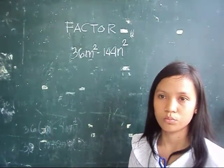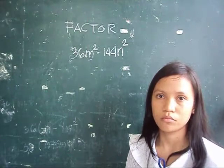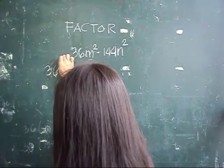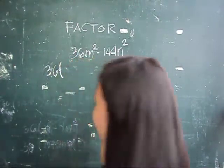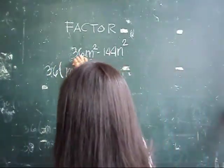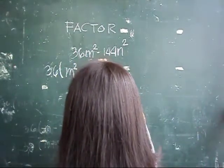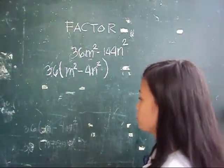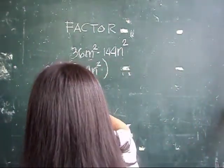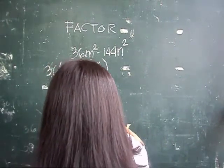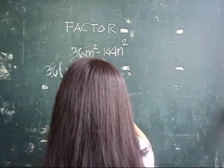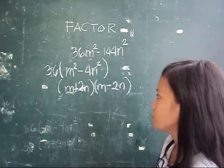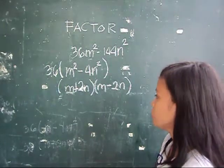Factor 36m squared minus 144n squared. Factor out 36. The other factor is n squared minus 4m squared. But we can still factor n squared minus 4m squared as a difference of squares. So the factors are 36, n plus 2m, and n minus 2m.